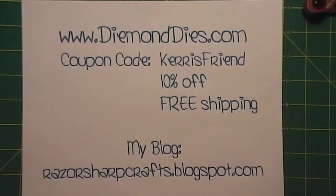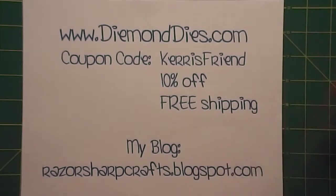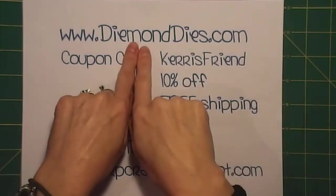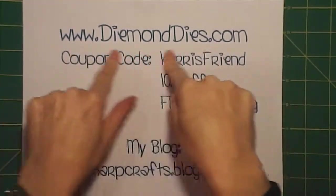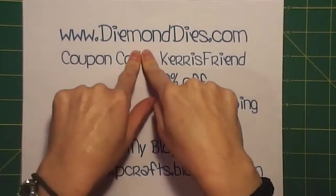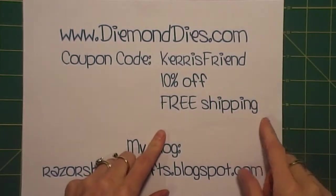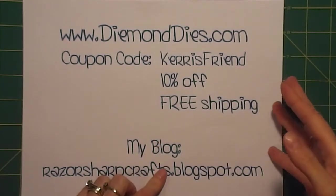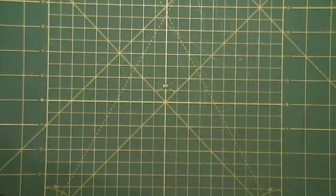Hello YouTube, this is Carrie from Razor Sharp Crafts and I am back with my matchbox design team project for Diamond Dyes. We're going to use the dies in this one. If you want to purchase any of the dies I use, you can get them at diamonddyes.com and if you use coupon code Carrie's Friend you will get 10% off plus free shipping. So let's just get to it.